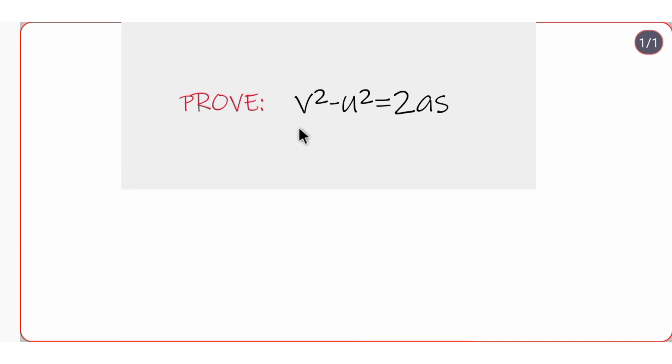In this video we will prove the third equation of motion which is v squared minus u squared equals 2as. This is for an object moving with uniform acceleration.